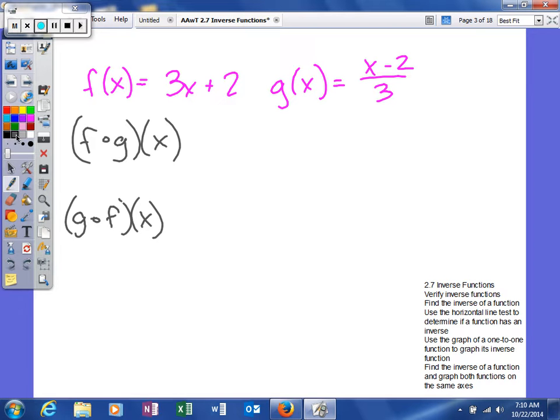The first way is to find f of g of x and g of f of x. To prove that they're inverses, both of these have to equal x when we find the composite function and simplify them.